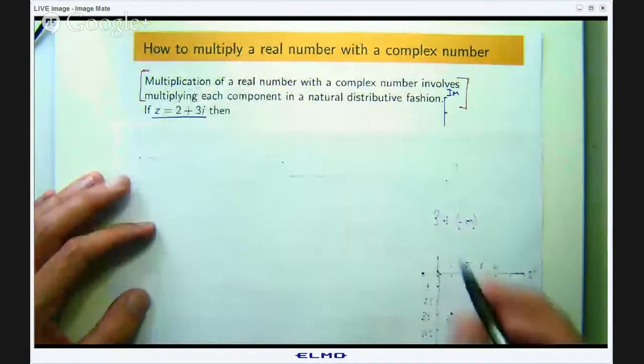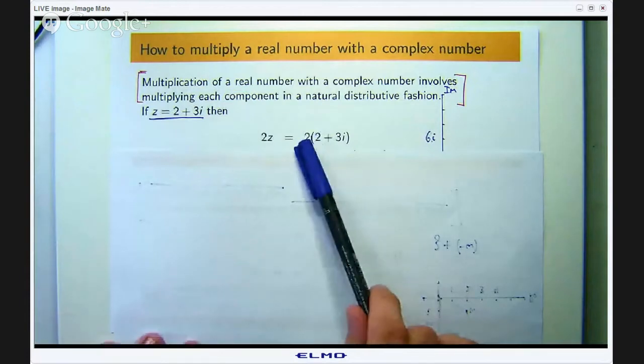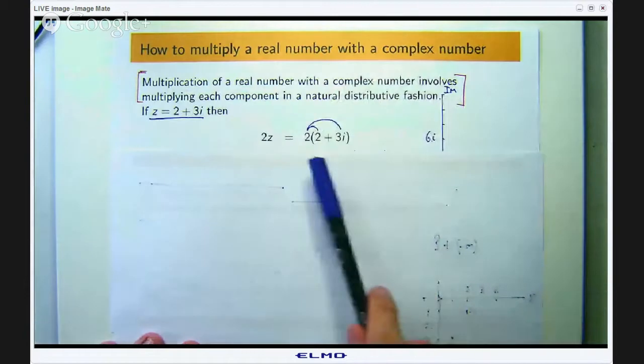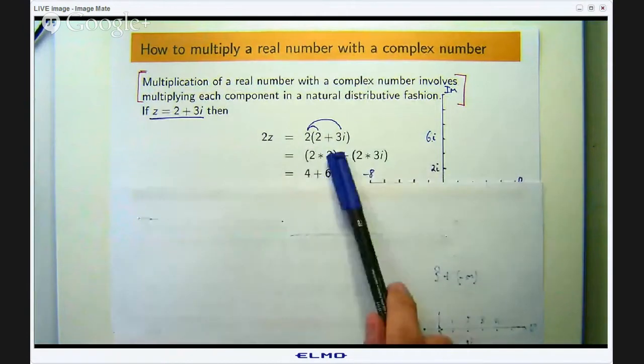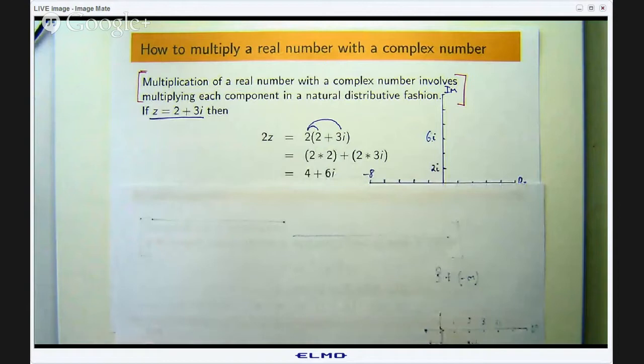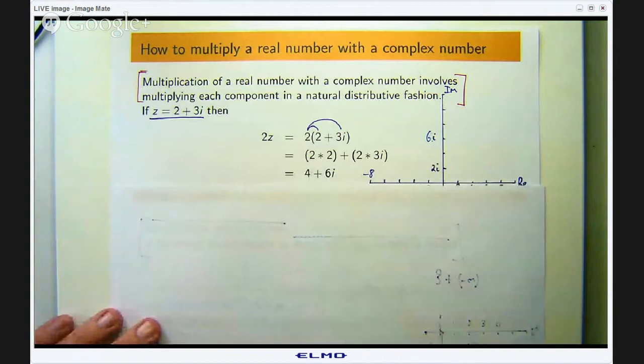If z is the complex number 2 + 3i then let us compute 2 times z. Well 2 times z is 2 times this so if I distribute that 2 with this 2 and this 3i then you will get the following. 2 times 2 is 4, 2 times 3i is 6i. So I get the complex number 4 + 6i.